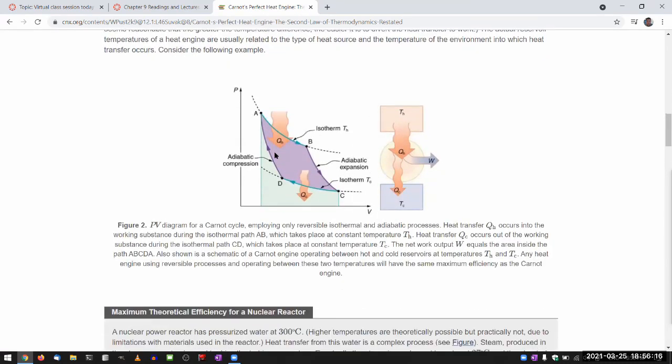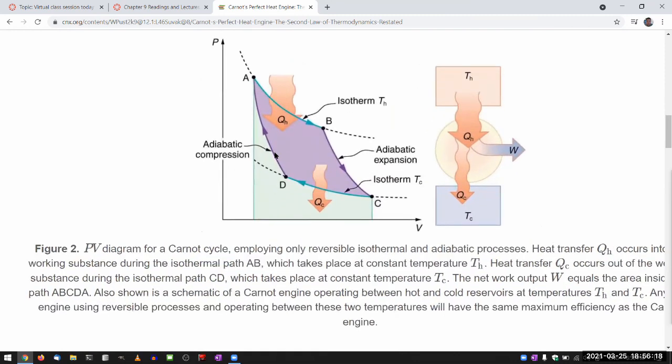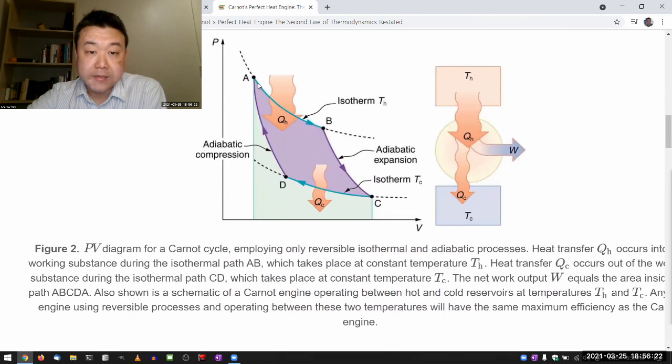But when you look at this process, this is what that idealized means. When the engine expands, when it's doing the power stroke, it's moving so slowly so that the engine is always at a constant temperature. It's moving along this isotherm that represents this hot temperature.